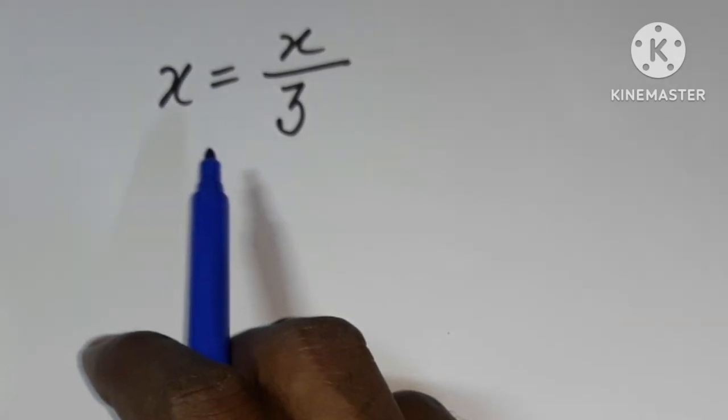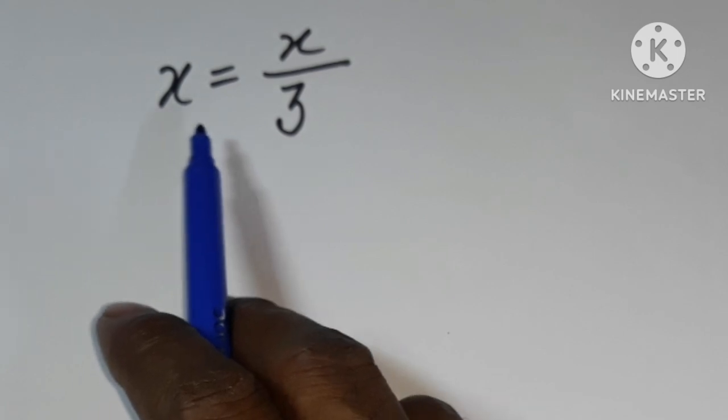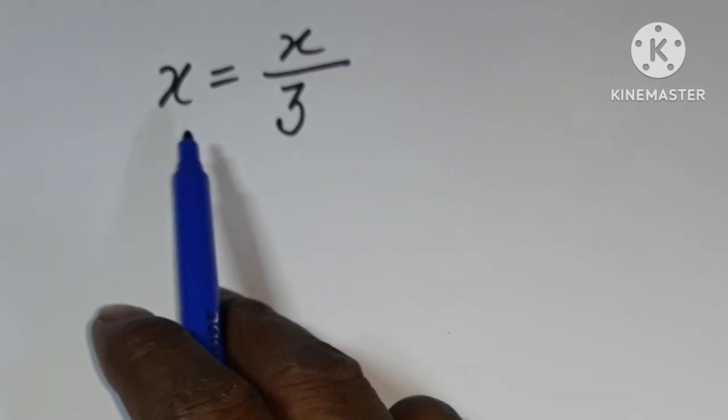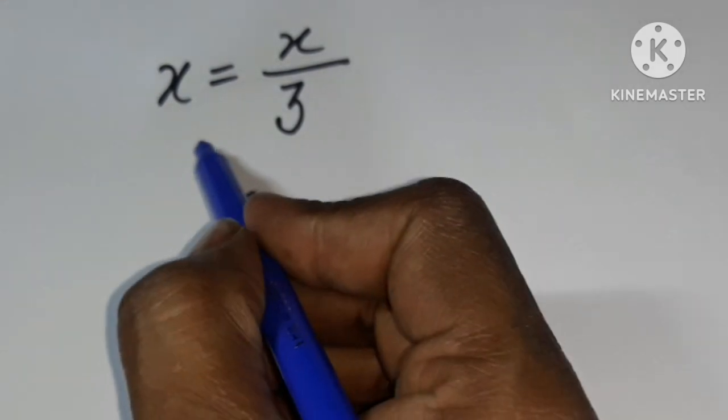We need to find the value for x. To solve this, all the variables should be placed on the left side and all the constants should be placed on the right side.